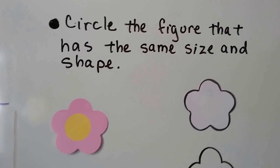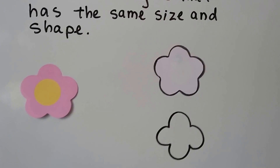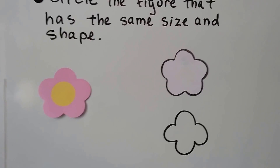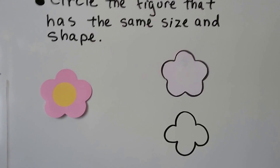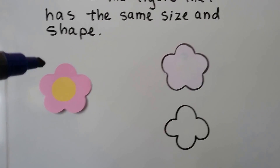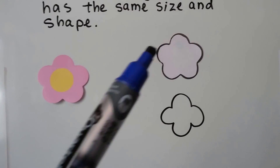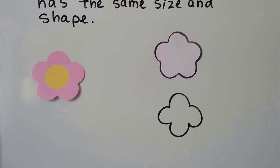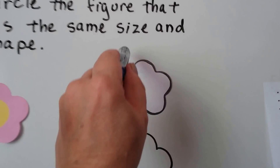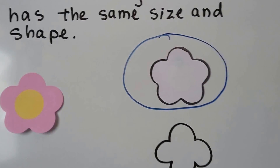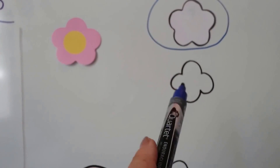Circle the figure that has the same size and shape. Take a look at this flower here — which one has the same size and shape, this one or this one? We could count the bumps. One, two, three, four, five bumps. This one has one, two, three, four, five bumps. This one has one, two, three, four bumps. So we know that this one has the same size and shape. Plus that one looks a little smaller.